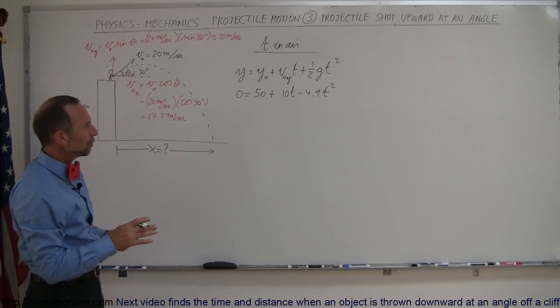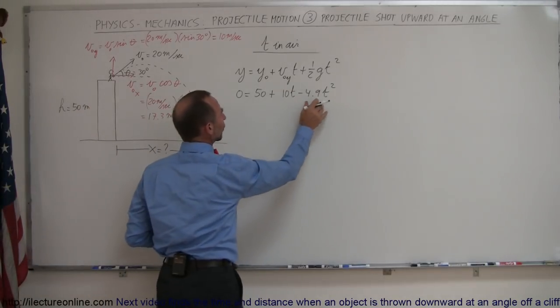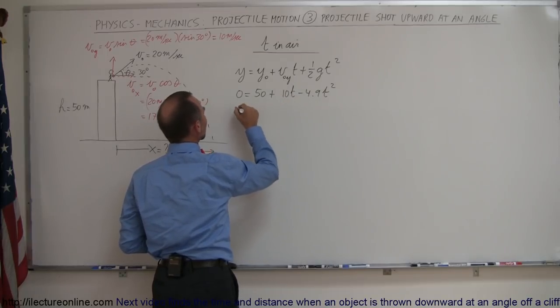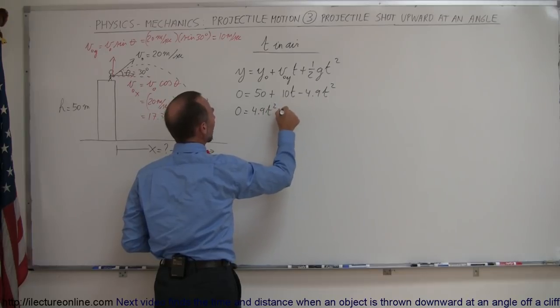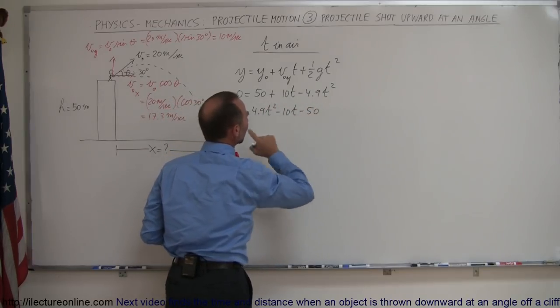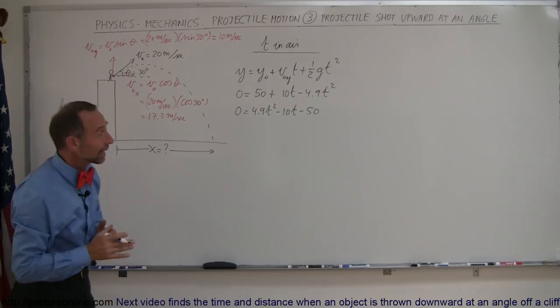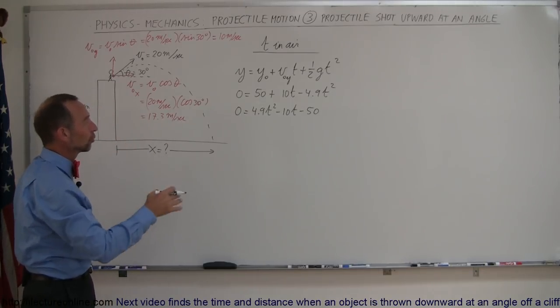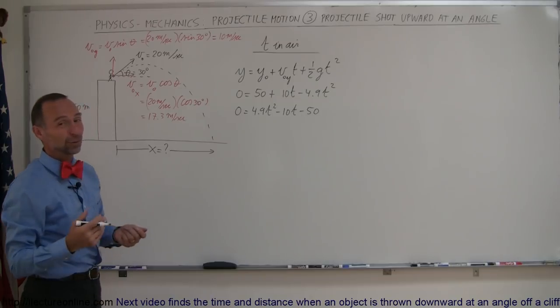And before we do that let's rearrange the terms. Let's put this one first and let's change the sign so that the first component will be positive. So 0 equals 4.9 t squared minus 10 t minus 50. Notice I simply multiplied both sides by negative 1 and I rearranged the terms from highest order to lowest order. So now I use the quadratic formula.